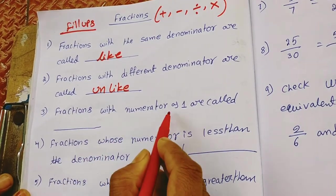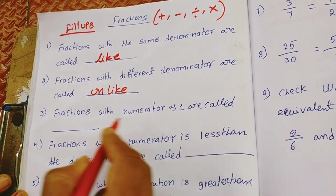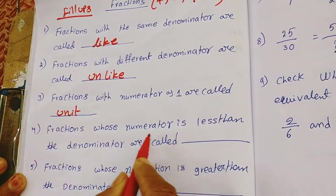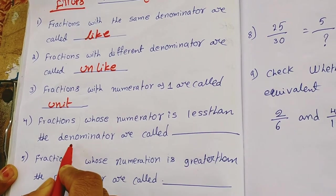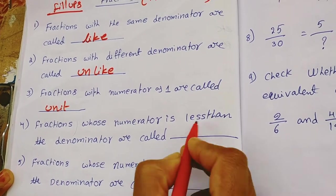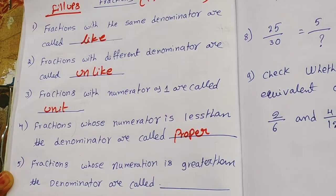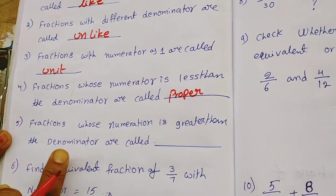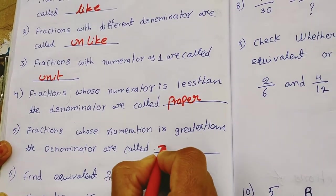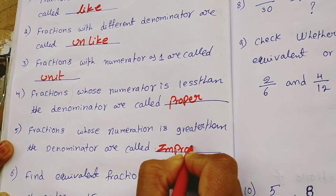Fractions with numerator as 1 are called unit fractions. Fractions whose numerator is less than the denominator are called proper fractions. Fractions whose numerator is greater than the denominator are called improper fractions.